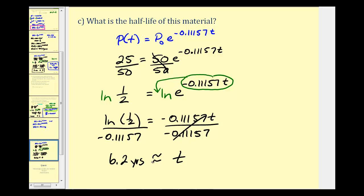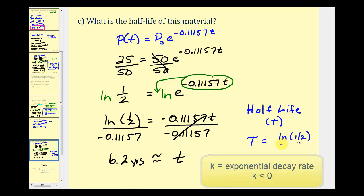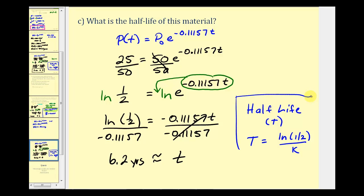There is a shortcut to find the half-life when we have exponential decay, which I showed in part one. If we call the half-life capital T, we can find it by taking natural log of one half and dividing by k. Of course, we can always just set up and solve a similar equation as we did here. I hope you found this helpful — thank you for watching.